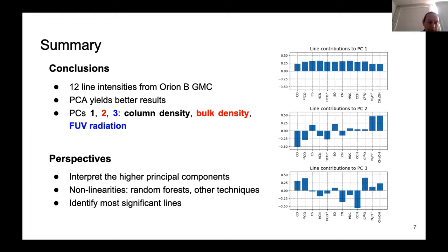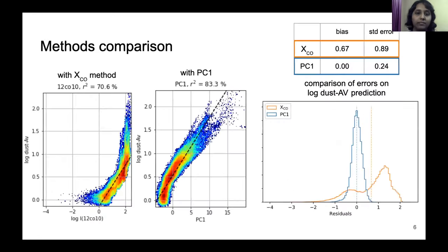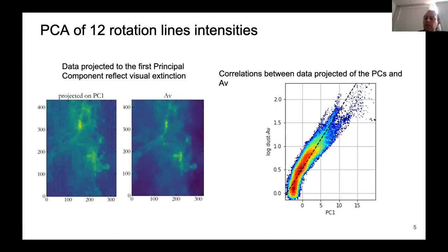Thank you. So I don't see any questions. So you showed a map of AV and I was wondering how variable it is, because there are a lot of things that happen on grain physics in dense regions. So how did you get this AV? Maybe I missed it.